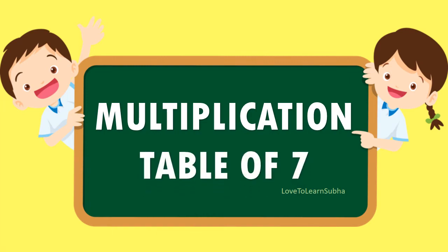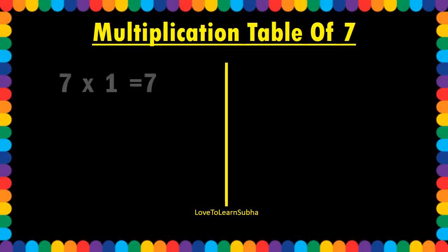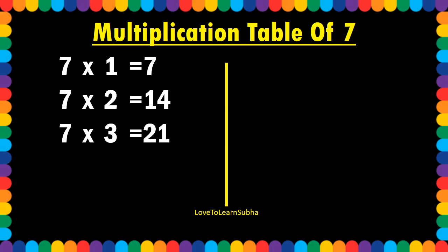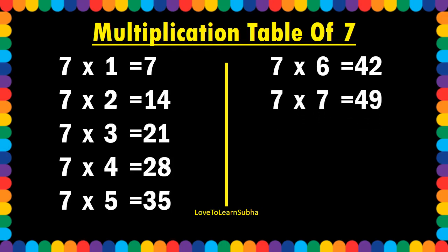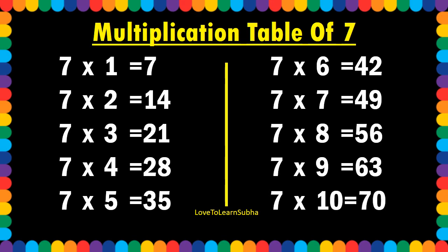Multiplication table of 7. 7 1s are 7. 7 2s are 14. 7 3s are 21. 7 4s are 28. 7 5s are 35. 7 6s are 42. 7 7s are 49. 7 8s are 56. 7 9s are 63. 7 10s are 70.